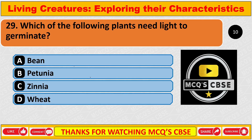Which of the following plants needs light to germinate? The correct answer is B: Petunia.